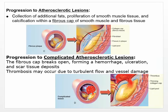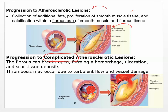From the fatty streak, the progression to the actual atherosclerotic lesion involves collection of additional fats and proliferation of smooth muscle tissue, then calcification within the fibrous cap made of smooth muscle, fibrous tissue, and elastin. That can progress to a complicated atherosclerotic lesion, where the fibrous cap breaks open, forming hemorrhage, ulceration, scar tissue deposits, and serious damage. When that happens, a thrombus may form due to turbulent flow and vessel damage, and that's where things get bad.